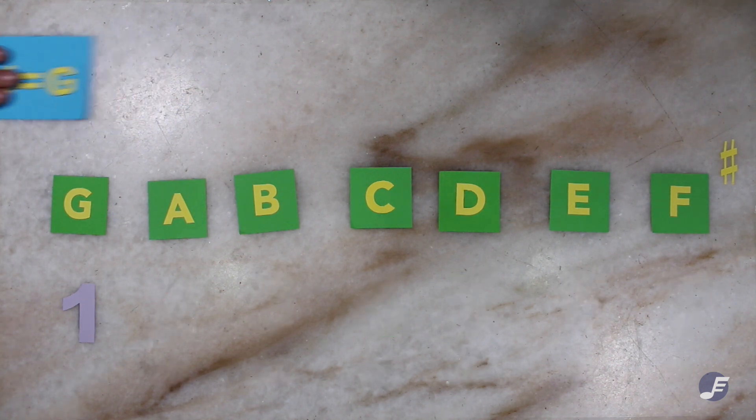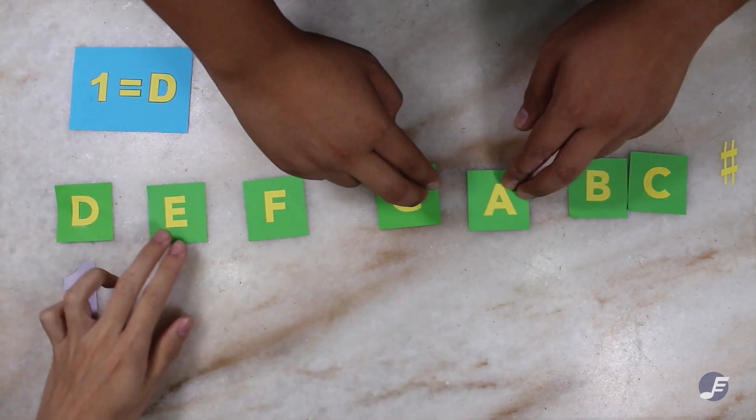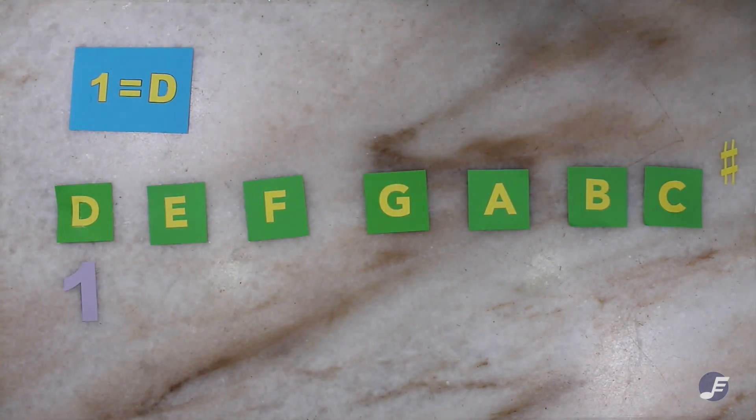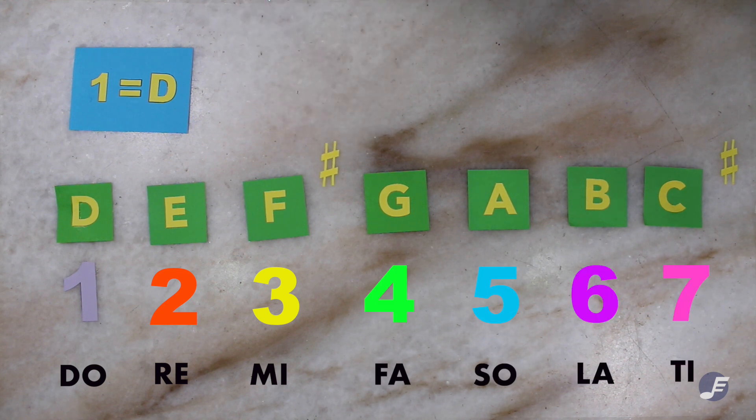Now, let's quickly look at the key of D. With what we just learned, D is now the new do. A quick move to help you see clearly, shall we? So now, D major will sound something like this. Simple as that.